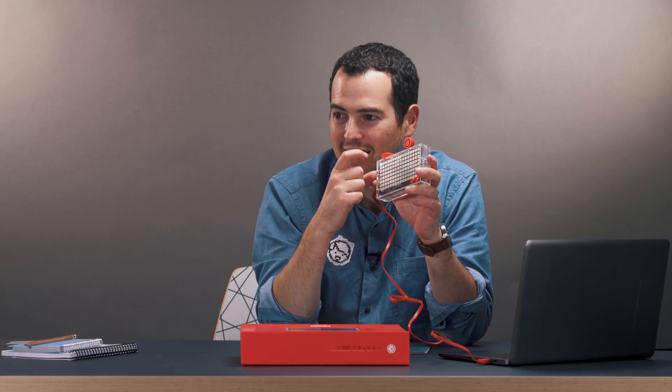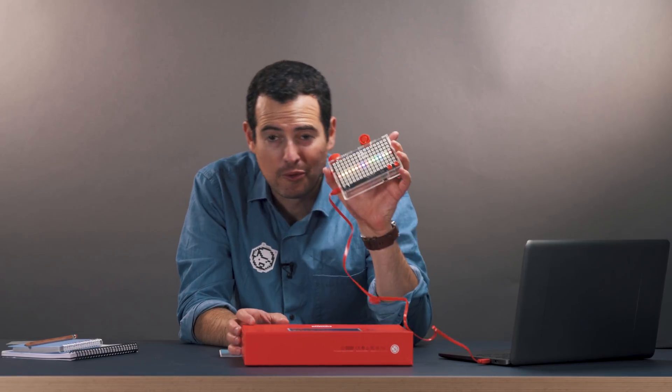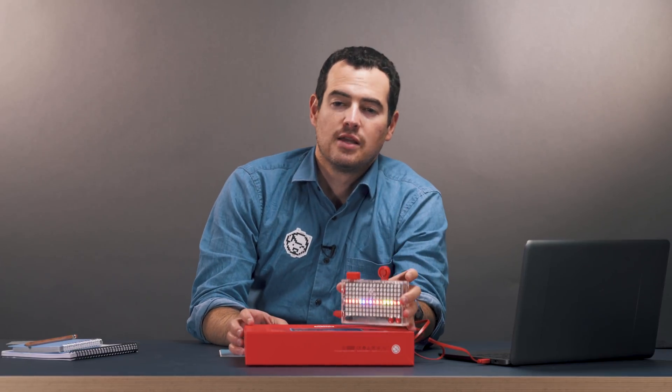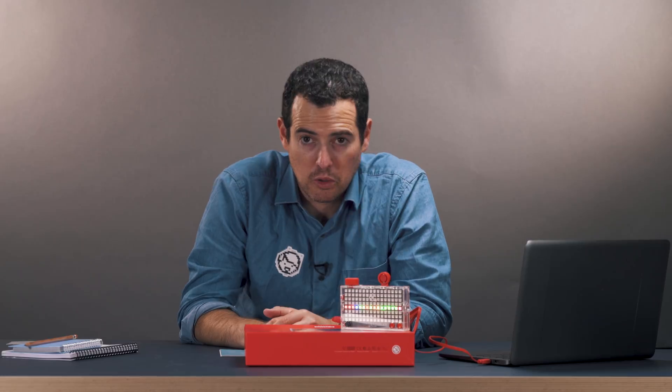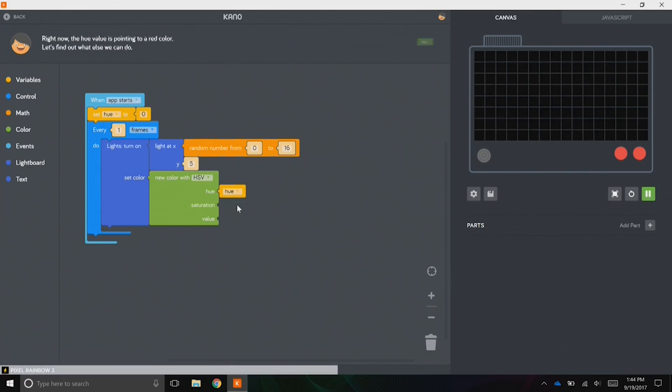So I went through and did some of the challenges, as you can tell by my proper rainbow in my light challenge. I'm probably the best coder that's ever lived. So they set it up in a cool way. You've got a canvas where it's a lot of drag-and-drop stuff, like I said, like Scratch. You can see how things connect and they have different colors.